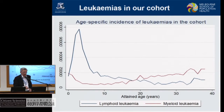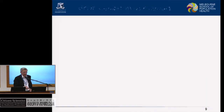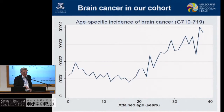Just to show that the data looked as expected: we observed the childhood peak in acute lymphoid leukaemia and the characteristic age-incidence curve for brain cancer.